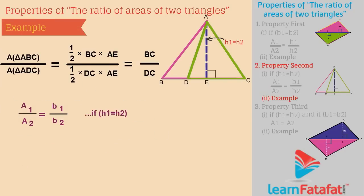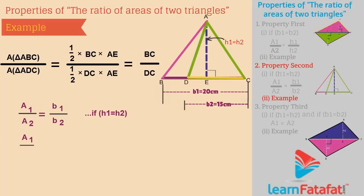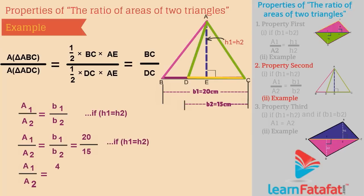For example, if BC equals B1 equals 20 cm, and DC equals B2 equals 15 cm, then A1 divided by A2 is equal to B1 divided by B2, which is equal to 20 divided by 15, which is equal to 4 divided by 3.